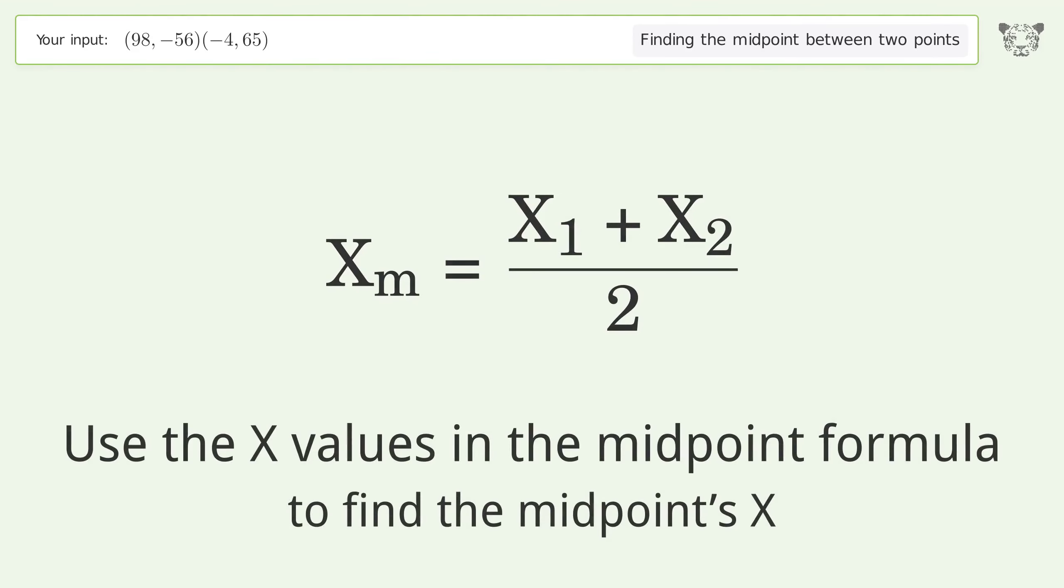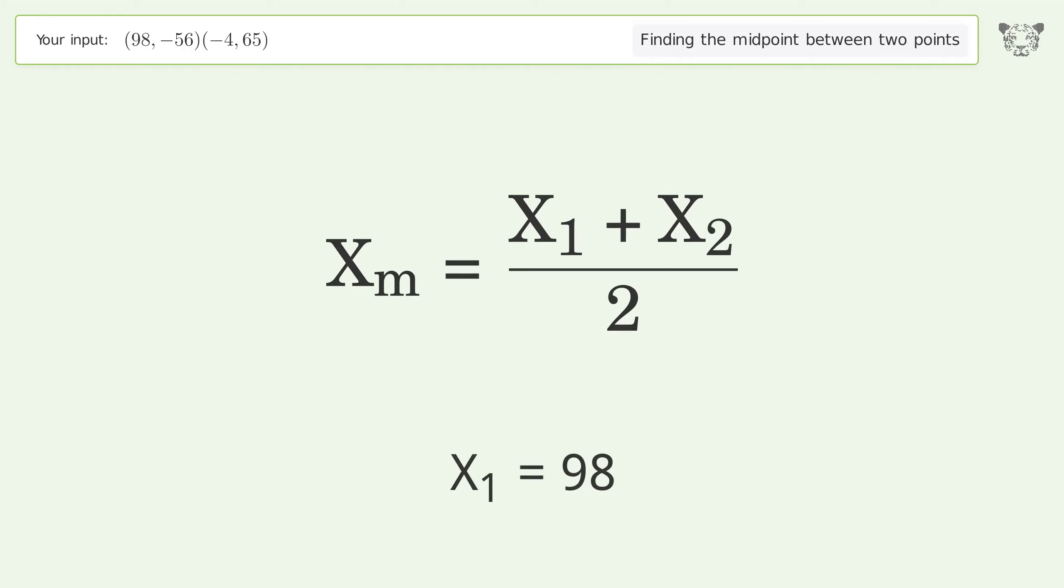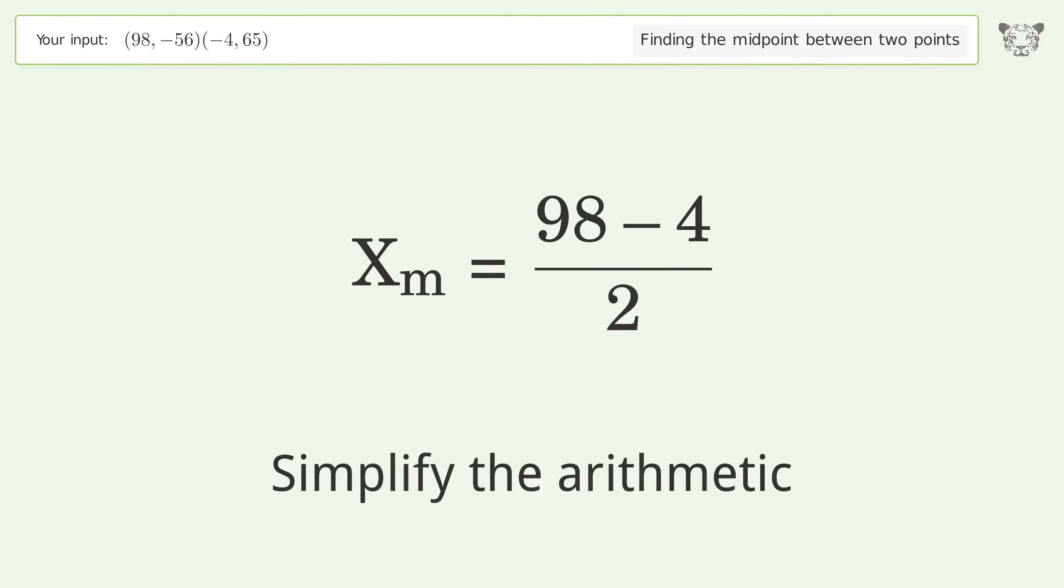Use the x values in the midpoint formula to find the midpoint's x. x1 equals 98, x2 equals negative 4. Simplify the arithmetic.